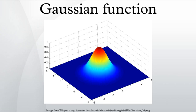Two-dimensional Gaussian function. In two dimensions, the power to which e is raised in the Gaussian function is any negative definite quadratic form. Consequently, the level sets of the Gaussian will always be ellipses.